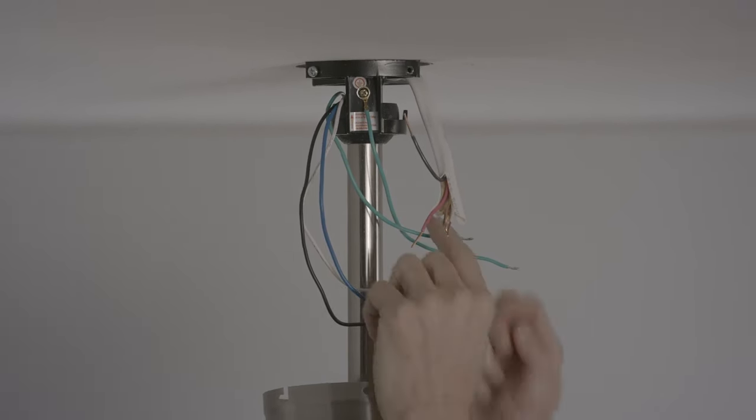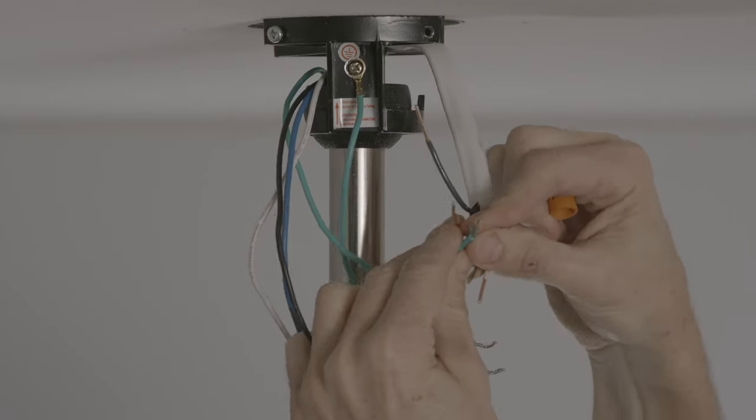To do this, the wire from your wall circuit to your light has to have four wires. Connect the green to the ground wire.